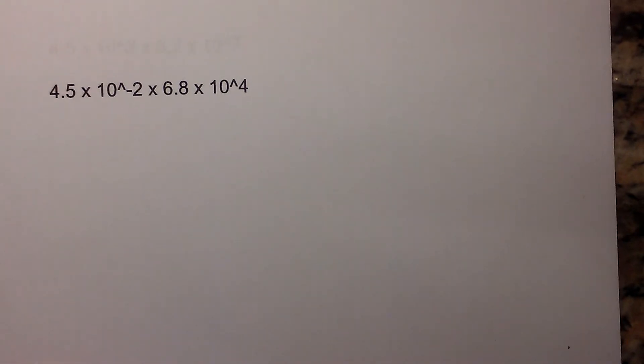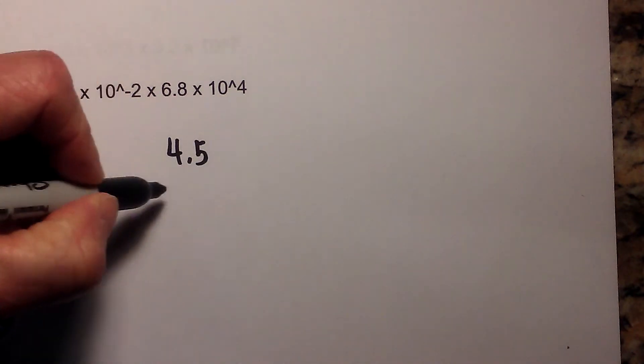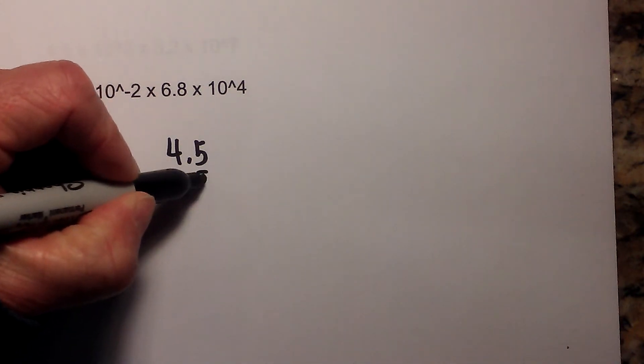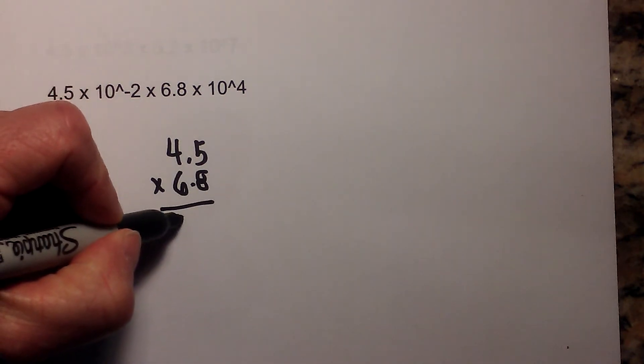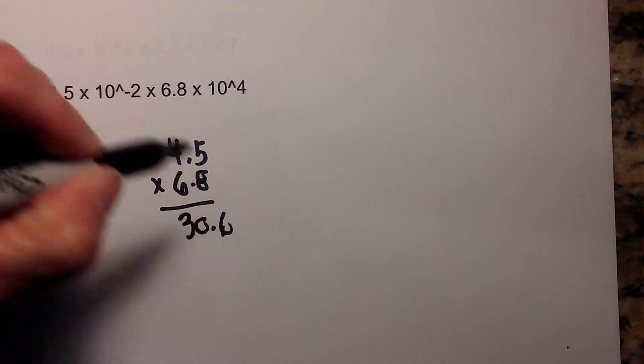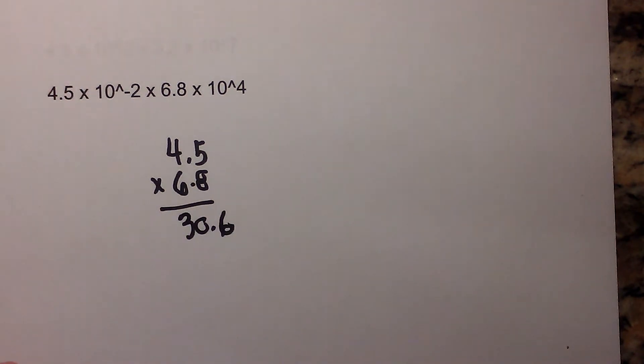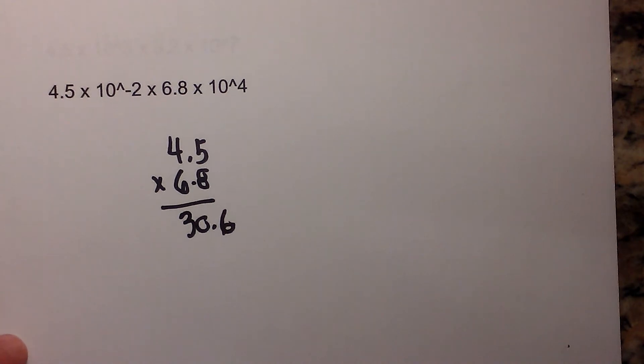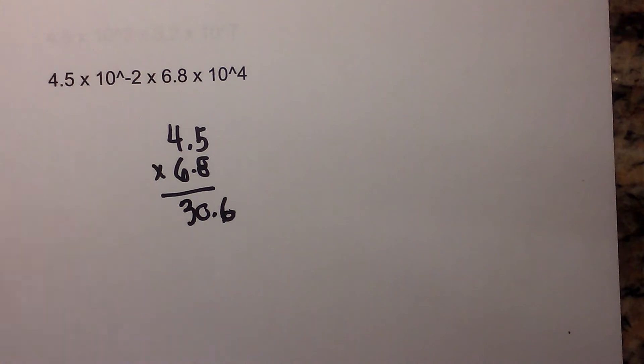Okay, so first we have 4.5 times 6.8. So the first thing I will do is multiply 4.5 times 6.8, and when I do that, I'm not going to do the long multiplication to speed it up. That's 30.6. If you're having some trouble with long multiplication, I will put a link for that. So 4.5 times 6.8 is 30.6, so that's step 1.